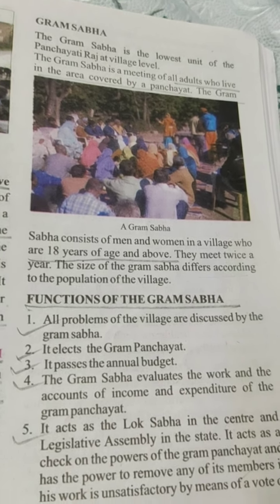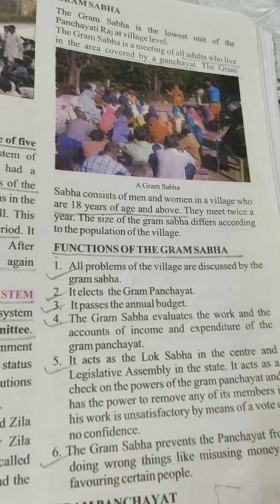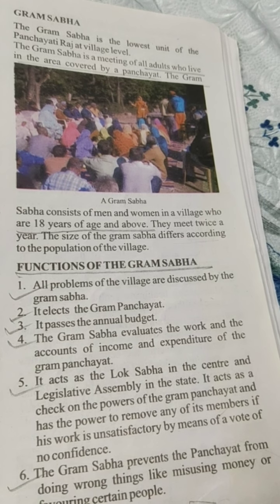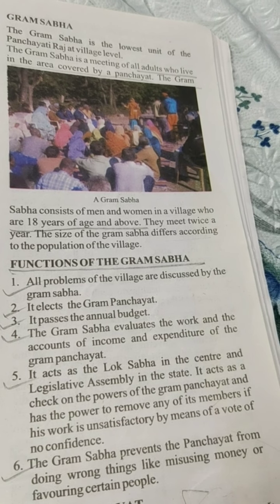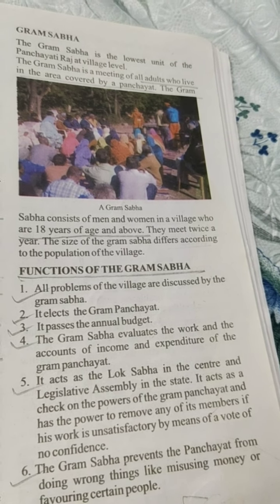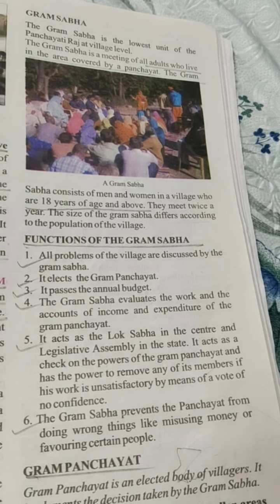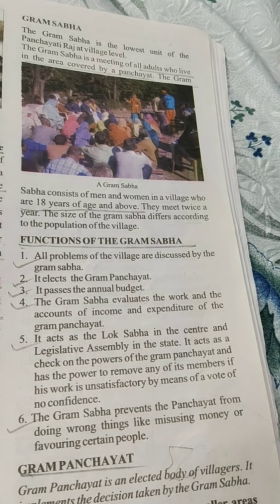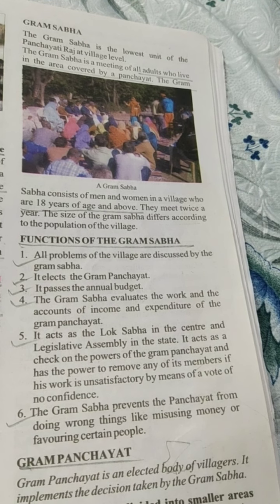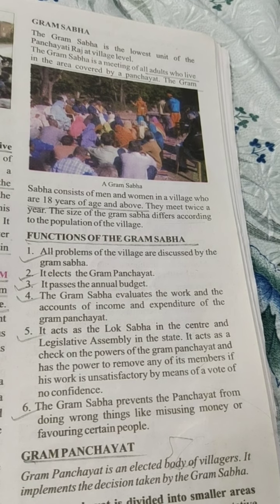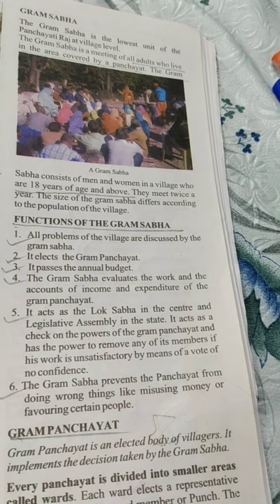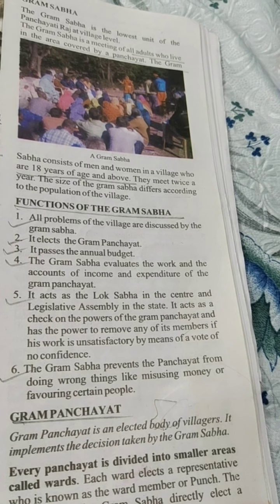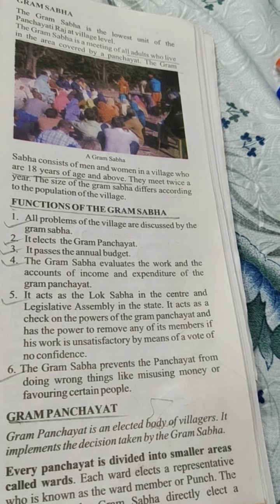Functions of the Gram Sabha — there are six points. Point one, all problems of the village are discussed by the Gram Sabha. Point two, it elects the Gram Panchayat. Point three, it passes the annual budget. Point four, the Gram Sabha evaluates the work and the accounts of income and expenditure of the Gram Panchayat. Point five, it acts as the Lok Sabha in the center and the legislative assembly in the state — it acts as a check on the powers of the Gram Panchayat and has the power to remove any of its members if their work is unsatisfactory by means of a vote of no confidence. Point six, the Gram Sabha prevents the Panchayat from doing wrong things like misusing money or favoring certain people.